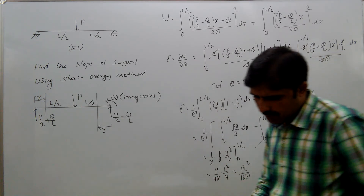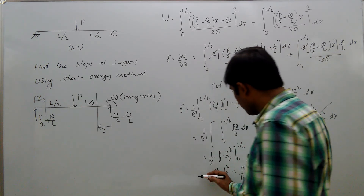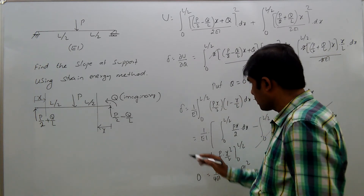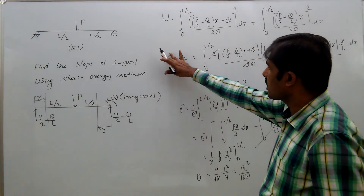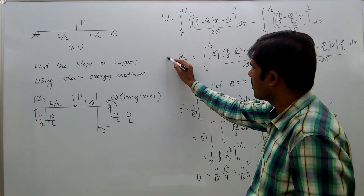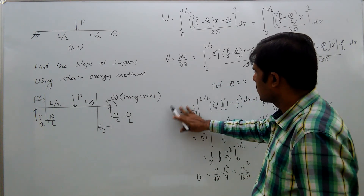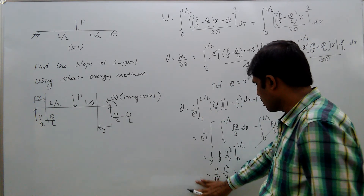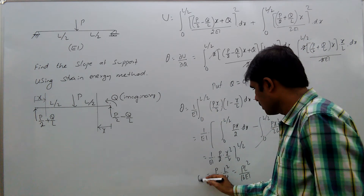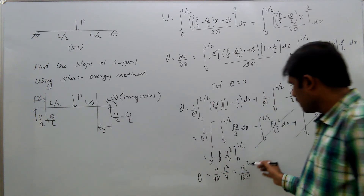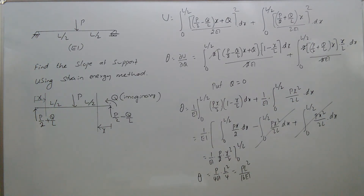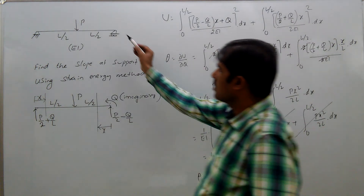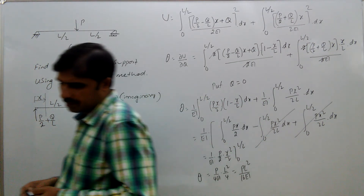PL squared by 16EI is theta — not delta, sorry — this is theta, the rotation. So theta equals PL² / 16EI. That is the slope at the support.